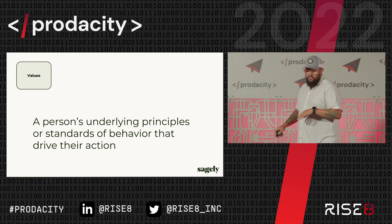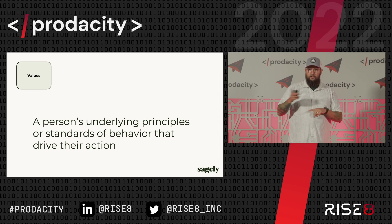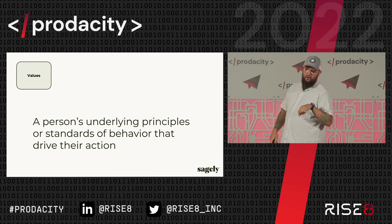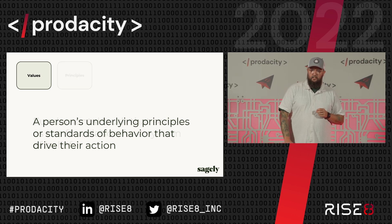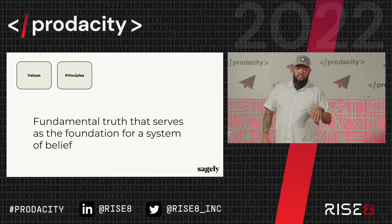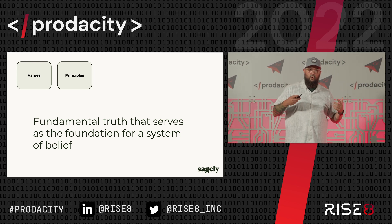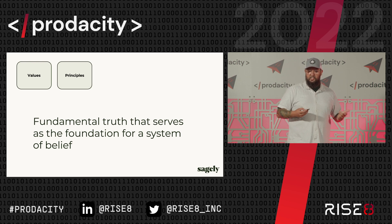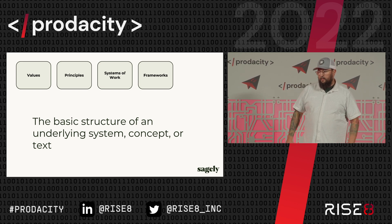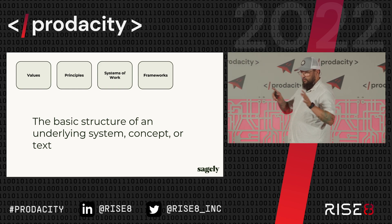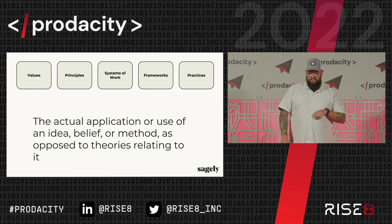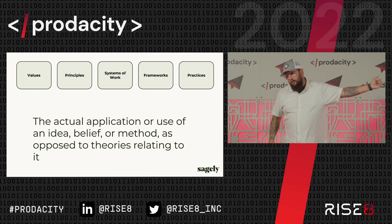So now we're going to shift back and do a bit of a recap, this time starting from values and working over to practices. Values are a person's underlying principles or standards of behavior that drive their action. That builds into principles — a fundamental truth that serves as the foundation for a system of belief. You cannot actually have a system or system of work without underlying principles. Systems of work: agile, lean. Frameworks: the basic structure of an underlying system or concept. And then a practice is the actual application of one of those frameworks. Drawing a line left to right — things we believe in work their way over to things we do.